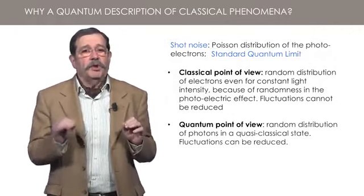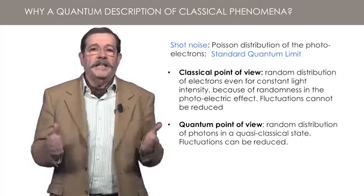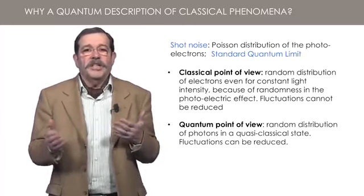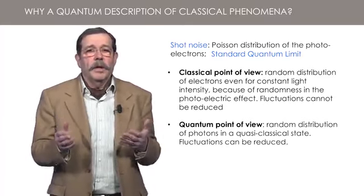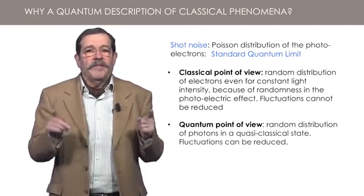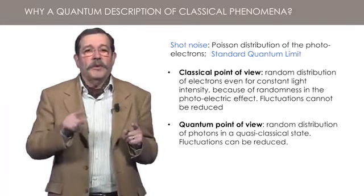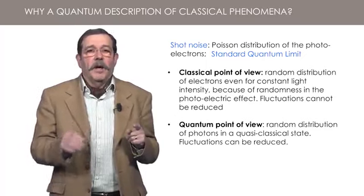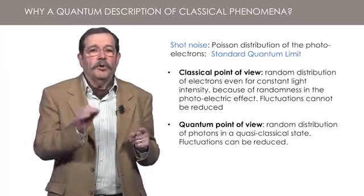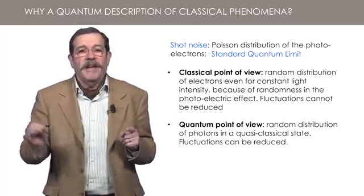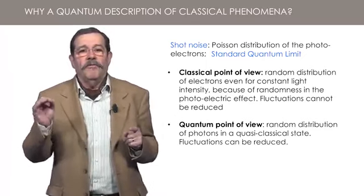In the quantum optics point of view, and for an ideal detector that converts each photon into an electron, the random distribution of the electrons reflects the fluctuations in the quantum radiation itself. The Poisson distribution of the photoelectrons simply reflects the Poisson distribution of the photons.